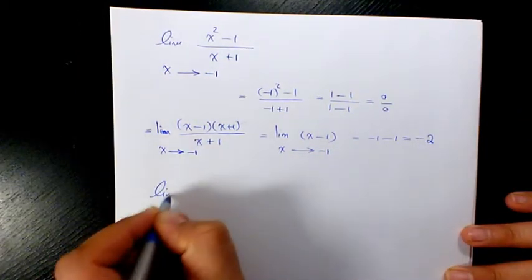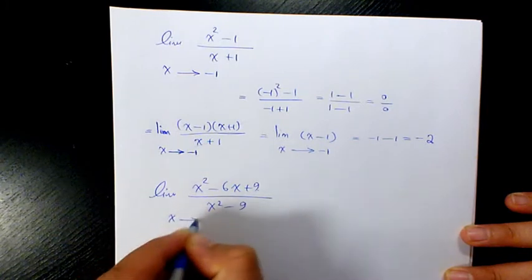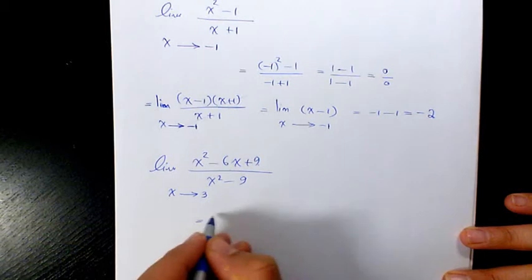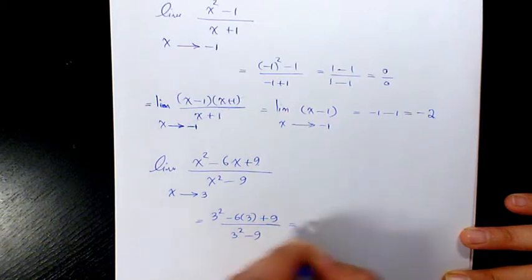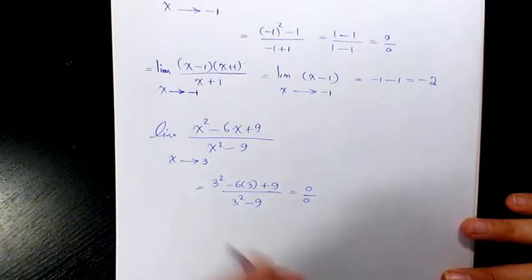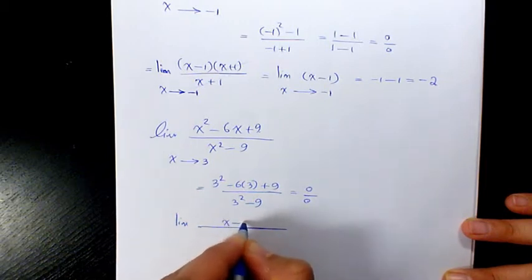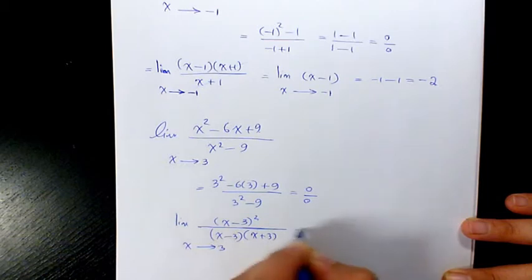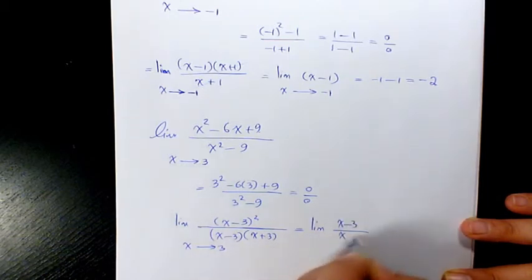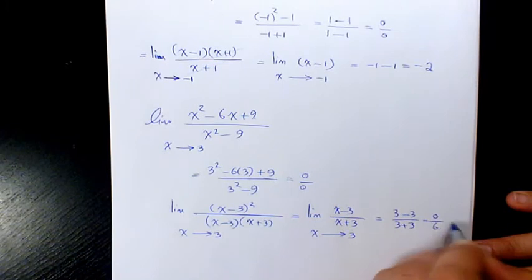Next example: the limit of (x squared minus 6x plus 9) over (x squared minus 9) when x is approaching 3. When you substitute, you get 0 over 0, so we need to factor it. It factors to (x minus 3) squared over (x minus 3)(x plus 3). Canceling gives (x minus 3) over (x plus 3), which at x equals 3 is 0 over 6, equals 0.